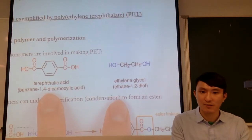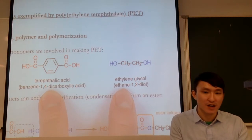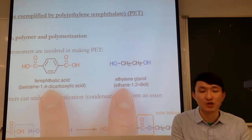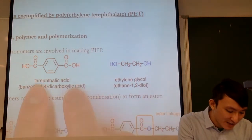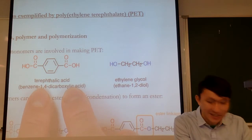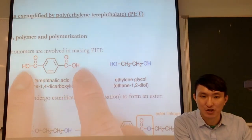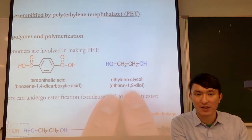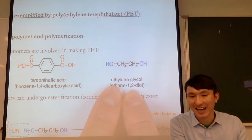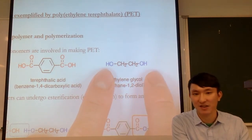In PET, we have two different monomers, which is quite different from addition polymers where most of the time we only have one monomer. The first monomer is terephthalic acid, a dicarboxylic acid with two carboxyl groups connected to a benzene ring. The second monomer is ethylene glycol, which is a di-alcohol or diol.